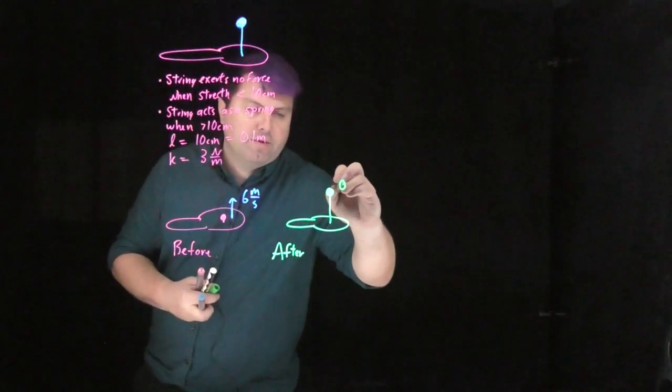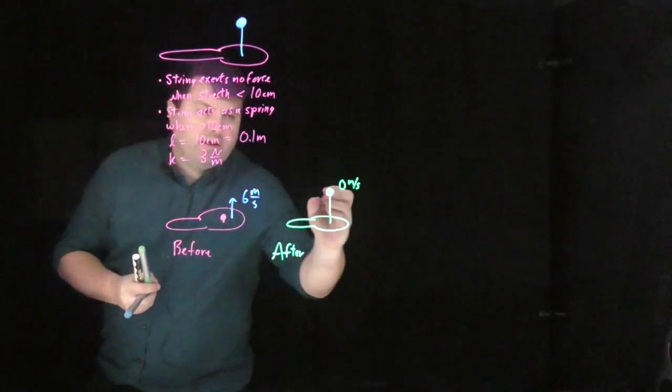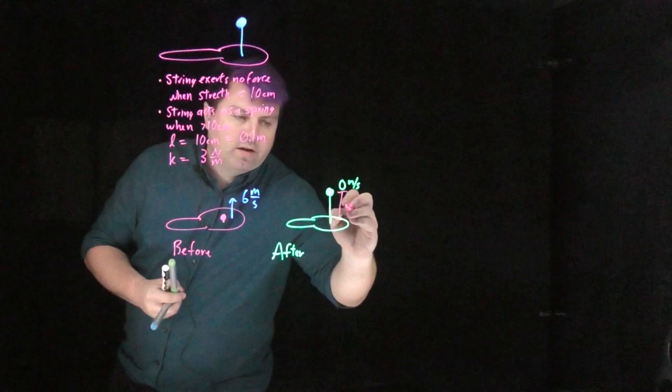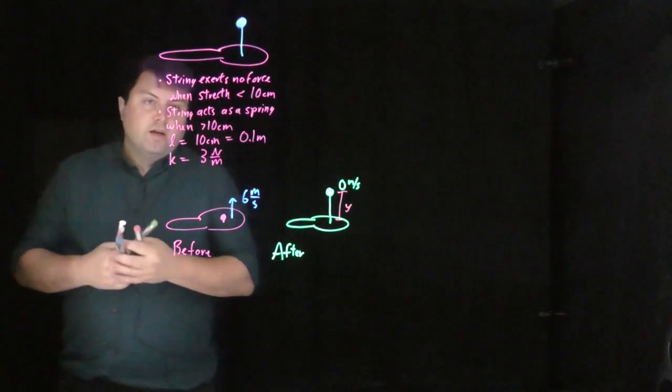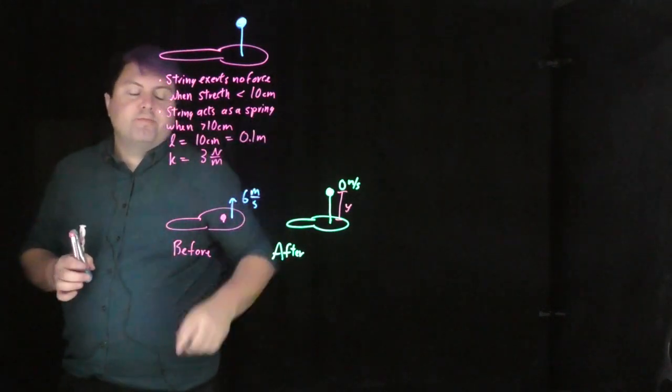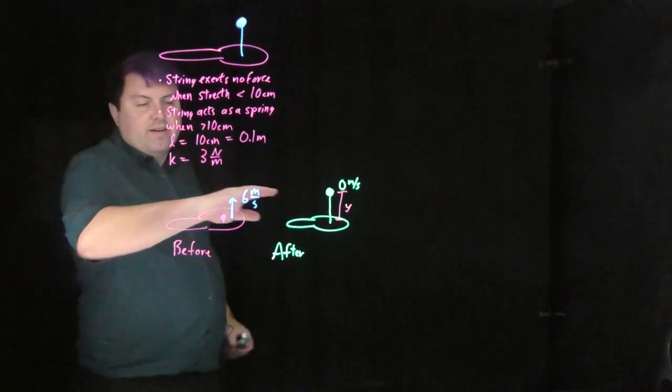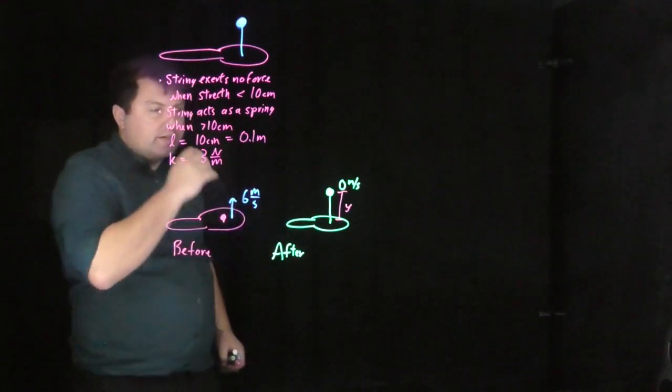At its maximum height, it will be traveling at 0 meters per second, but it will have an extension of this y. If we have a string acting as a spring, then our forces are not going to be constant once we get above 10 centimeters.